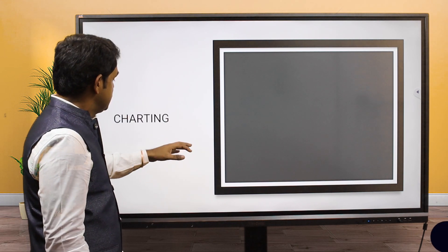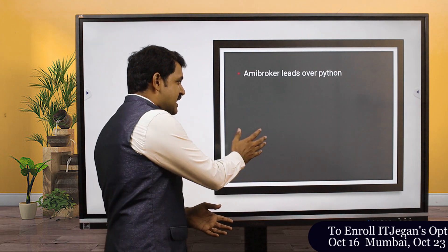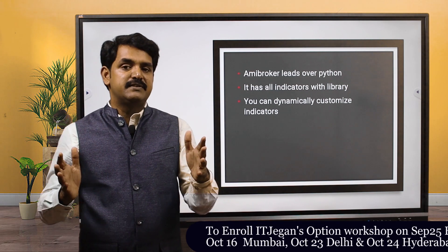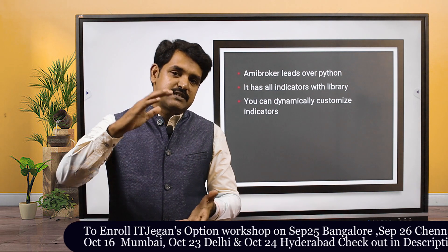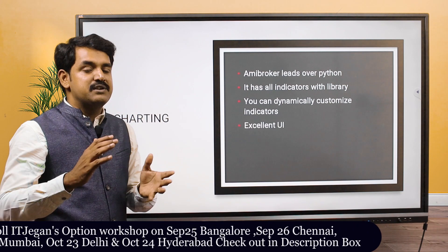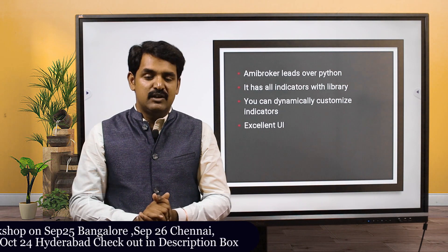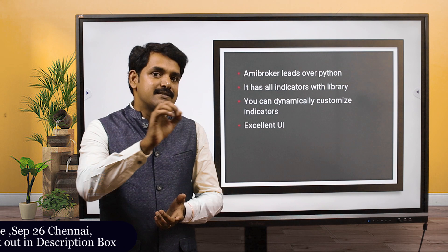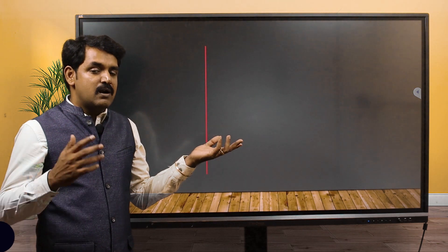For charting, AmiBoker clearly leads over Python because it has an excellent UI with all indicators - RSI, MACD, everything. You don't need to write any code; you can just drag and drop and it works like a charm. You can customize any parameter and the UI is super. With Python it is really tough - you need to write your own code. So charting-wise, AmiBoker is always best.